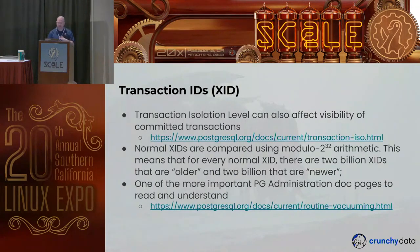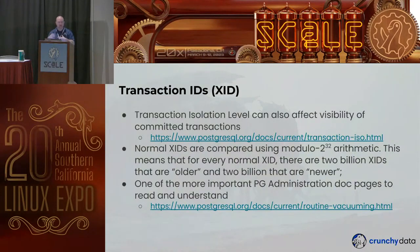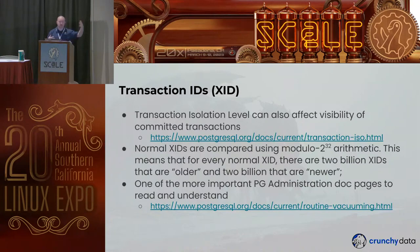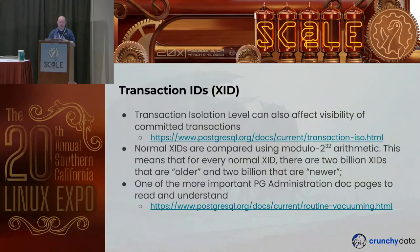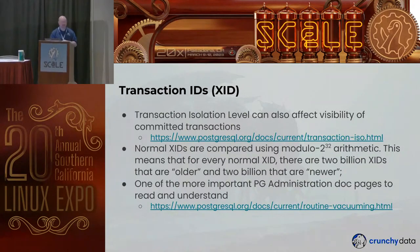A little bit more about transaction IDs: that visibility explanation was kind of general — there are transaction isolation levels in Postgres that affect when you see other people's committed transactions. For normal transaction IDs, they're compared using modulo 2^32 arithmetic, which basically means for your transaction ID there are 2 billion transaction IDs before you and 2 billion after you. So you have a maximum of about 2 billion transactions ahead of you at any one time. There are also special transaction IDs like the frozen one, initial ones, and invalid ones — those are static and don't require modulo arithmetic.